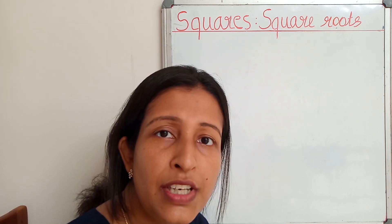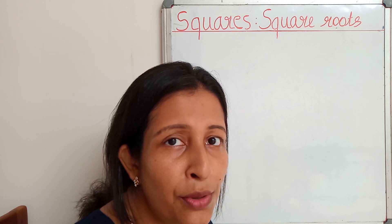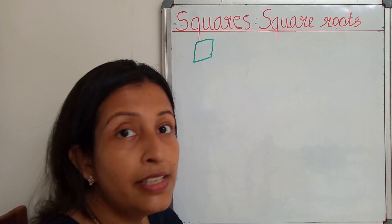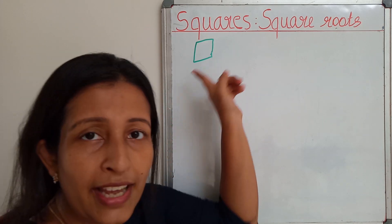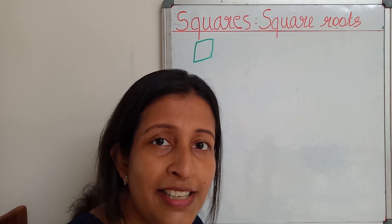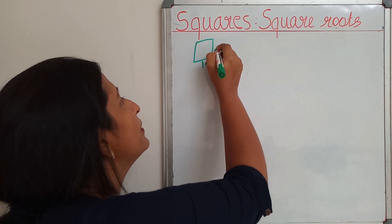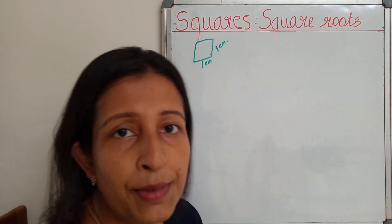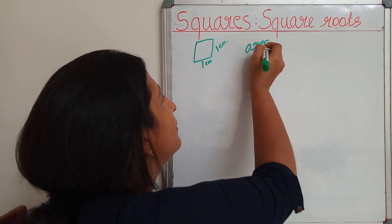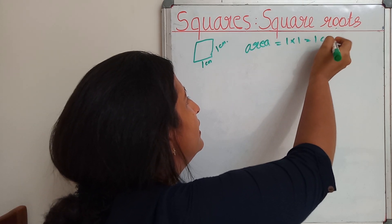Are you familiar with the word square? Have you ever heard the word square? Do you know how to draw a square? This is a square, and do you remember the formula for finding the area of a square? It is side into side. If this is 1 cm and 1 cm, then the area is equal to 1 x 1 = 1 cm square.